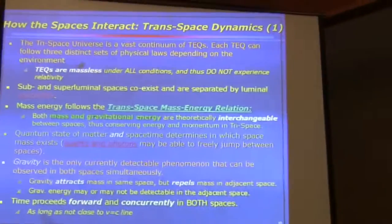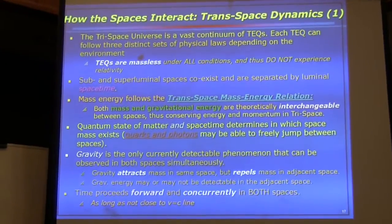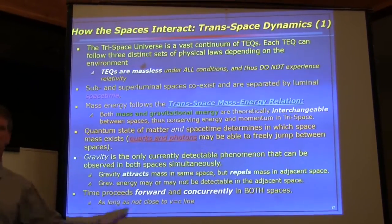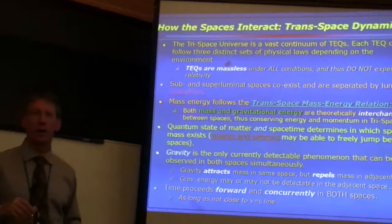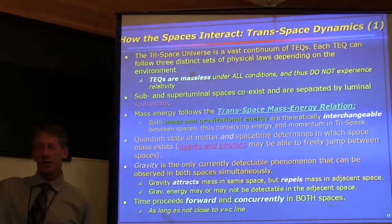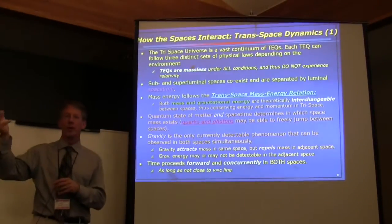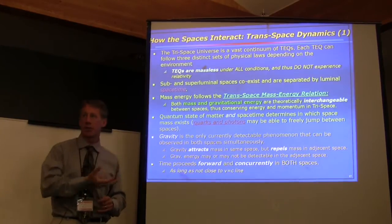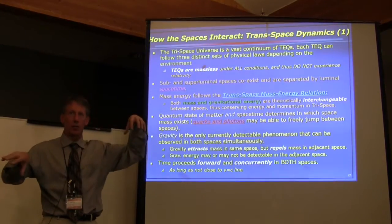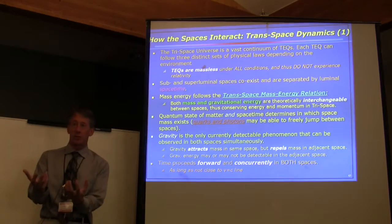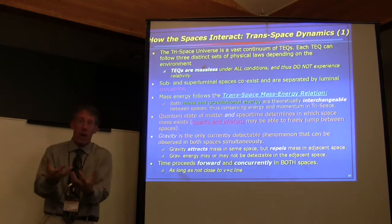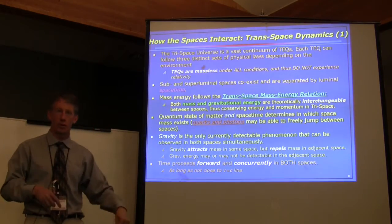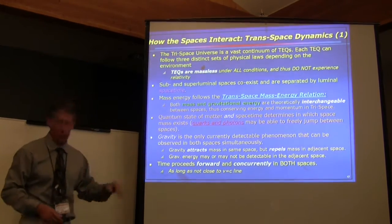Gravity attracts mass in the same space but repels mass in the adjacent space. We're all attracted to each other gravitationally — galaxies and so on. But if real mass exists at a superluminal velocity realm, it will produce a repulsive gravitational force to anything existing in our space, so they'll tend to go apart. However, two masses both going superluminal will attract each other.